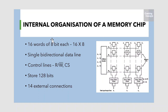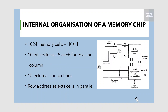The memory circuit given here stores 128 bits and requires 14 external connections for address, data and control lines, plus two lines for power supply and ground connection. Now let us consider a slightly larger memory circuit — one that has 1K, that is 1024 memory cells. This circuit can be organized as a 128×8 memory, requiring a total of 19 external connections.